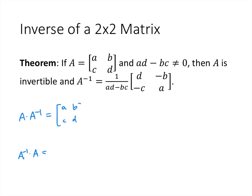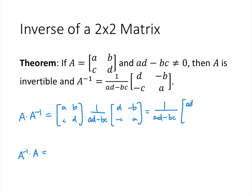In the calculation, we pull the scalar 1/(AD - BC) out. In the upper left-hand corner we get AD + B(-C) = AD - BC. In the upper right-hand corner we get A(-B) + BA = 0. In the lower left-hand corner we get CD + D(-C) = 0. In the lower right-hand corner we get -BC + AD = AD - BC. Multiplying by 1/(AD - BC) gives us [1, 0; 0, 1].